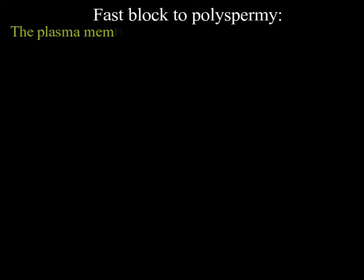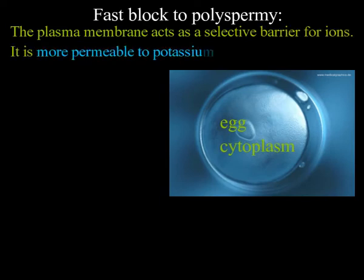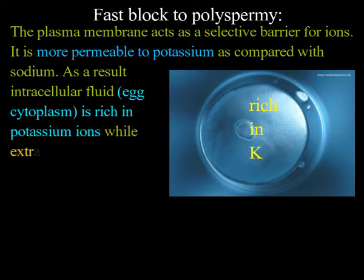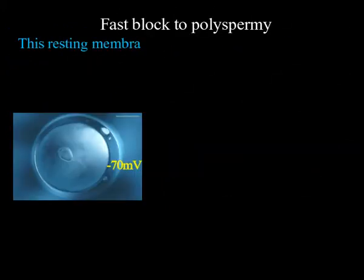First, the fast block to polyspermia. The plasma membrane acts as a selective barrier for ions and polar molecules. It is more permeable to potassium as compared to sodium. As a result, the intracellular fluid, that is the egg cytoplasm, is rich in potassium ions, while the extracellular fluid, that is sea water, is rich in sodium ions. This resting membrane potential across the egg membrane is minus 70 millivolts.